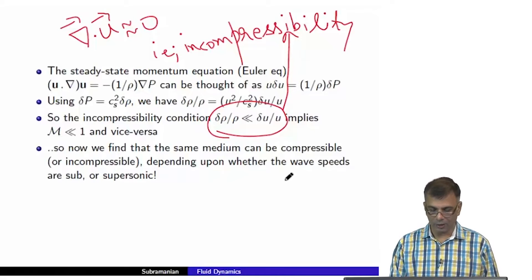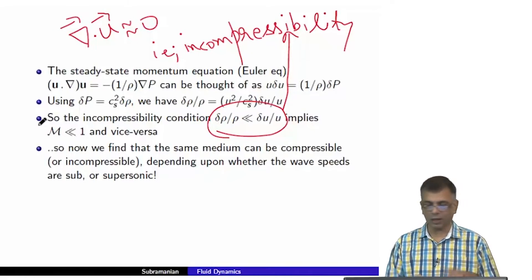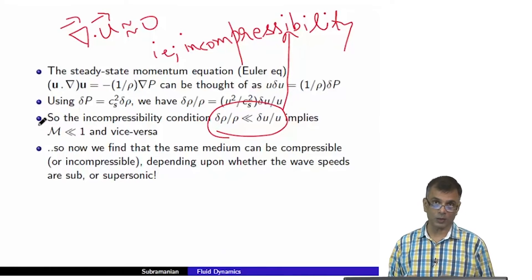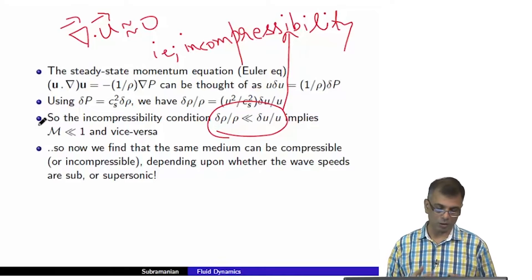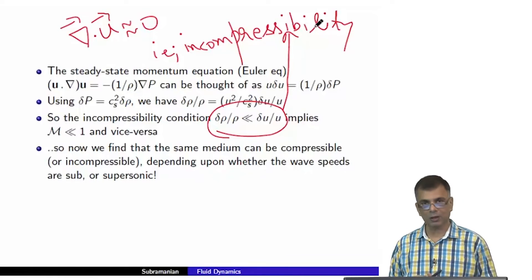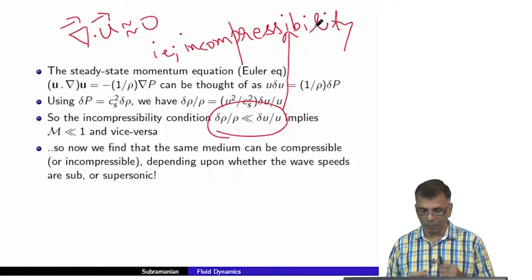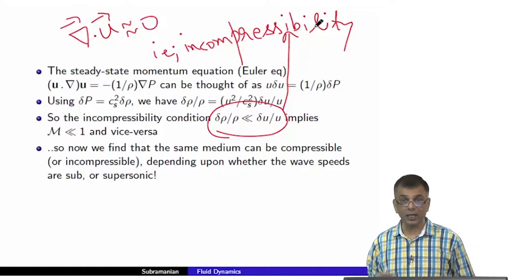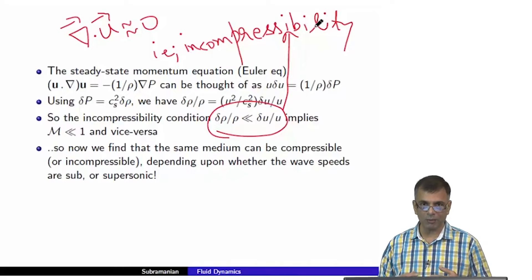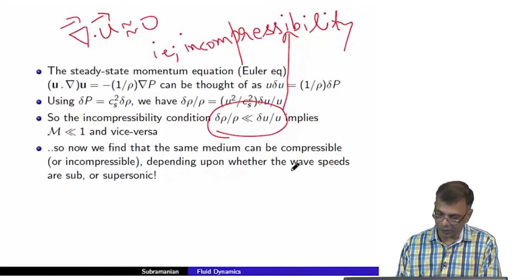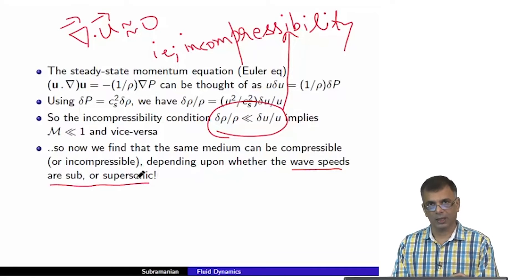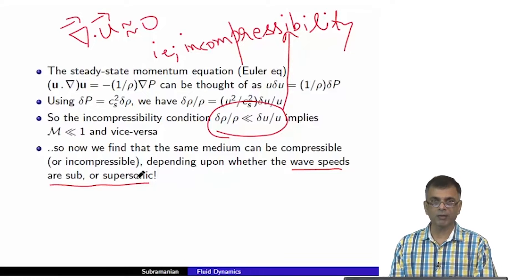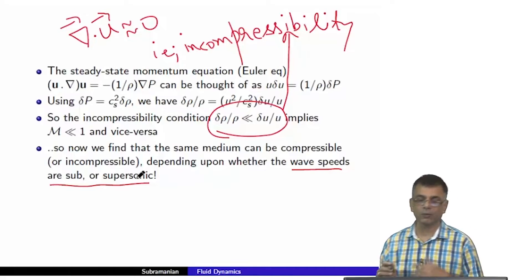Incompressibility implies that the Mach number is much, much less than one, and vice versa. If the Mach number is not much less than one — if the flows are somewhat supersonic — then the incompressibility approximation is not so good. There is no absolute classification of a medium as compressible or incompressible; it depends on whether the wave speeds are sub- or supersonic. If subsonic, incompressibility is a good approximation; if supersonic, it is not.